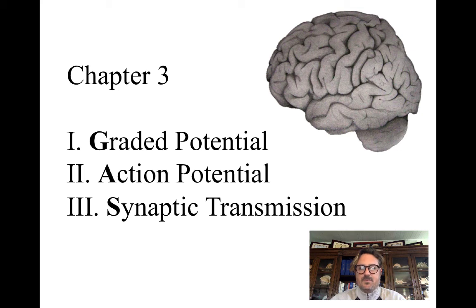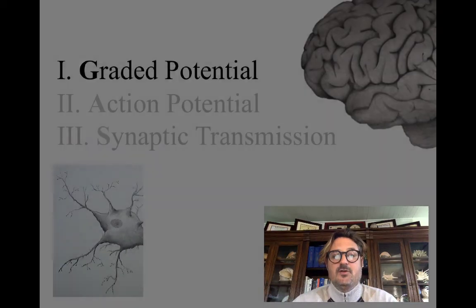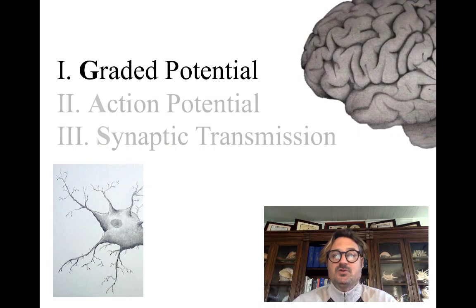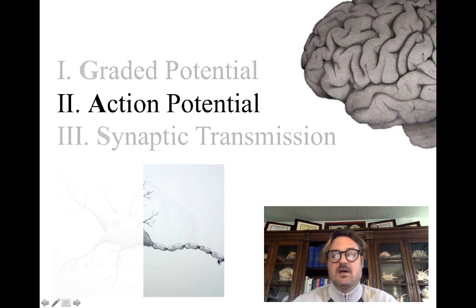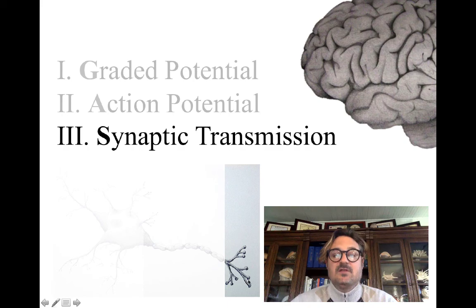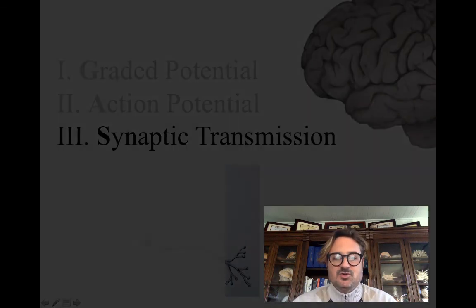A quick review. We talked about how we can divide the activity of the neuron into a graded potential, an action potential, and synaptic transmission. The graded potential, which we just discussed, occurs in the dendrites and the axon. The action potential occurs from the axon hillock and travels down the axon until it reaches the axon terminals. This is where synaptic transmission occurs.